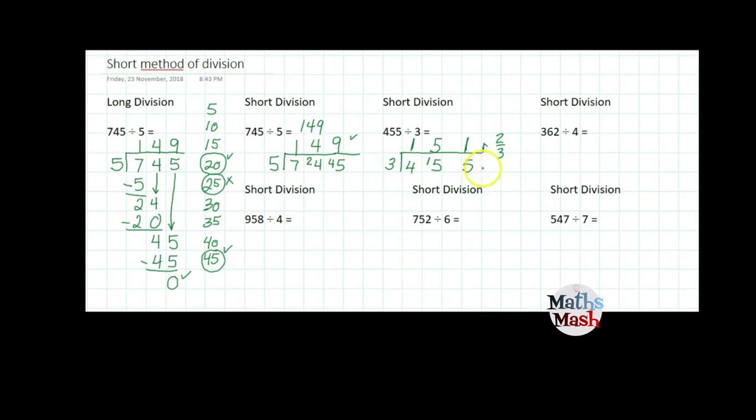So that means I have a remainder of 2 over 3. My divisor is on the bottom and my remainder is on the top. So it's 2 thirds. So 151 and 2 thirds is my answer.